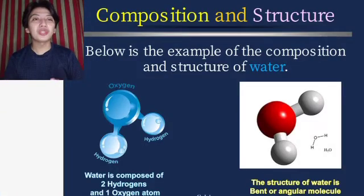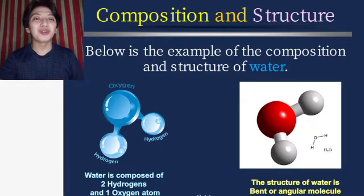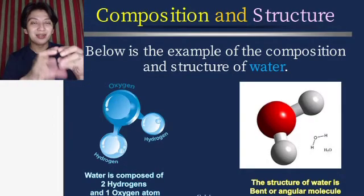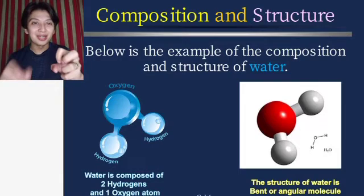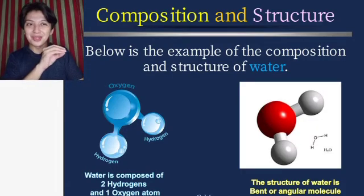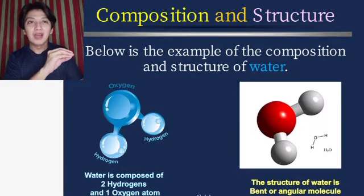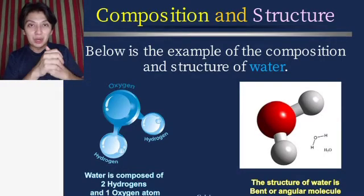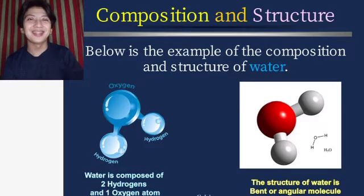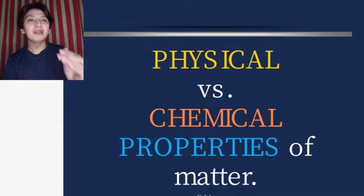Here is an example of the composition and structure of water. It looks like a triangle: one oxygen at the top and two hydrogens at the bottom, making a triangular or angular shape. Water is a bent or angular molecule. The composition: water is composed of two hydrogen atoms and one oxygen atom.